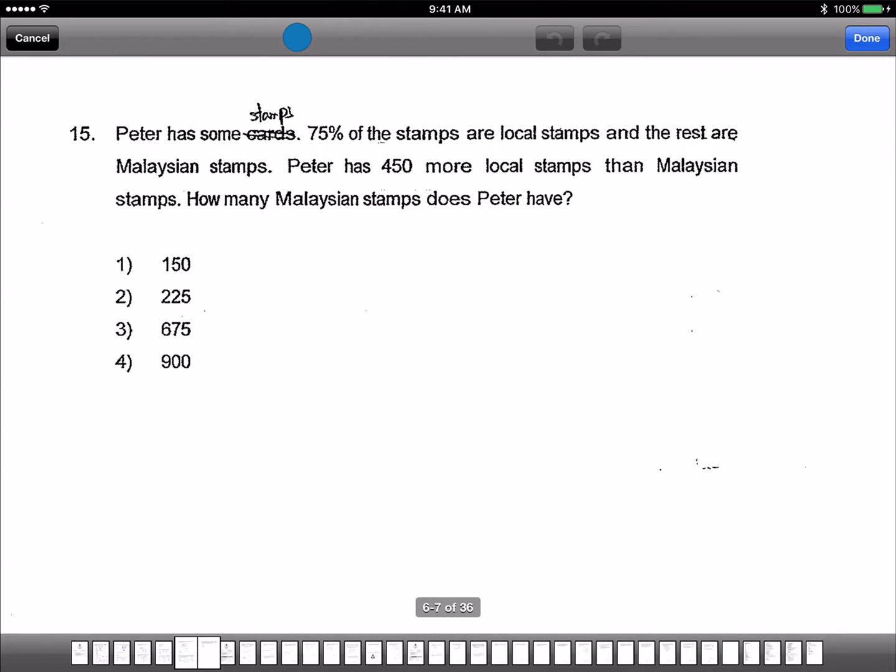And the last one. Peter has some stamps. 75% of the stamps are local stamps. The rest are Malaysian. Peter has 450 more local stamps than Malaysian. So 75% take away 25% equals to 50%. 50% represents 450. Peter has 450 times 2, 900. Answer is 4.